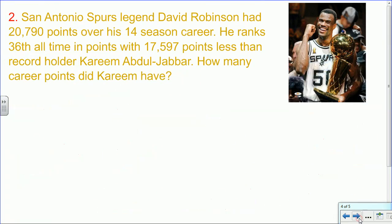Next one. San Antonio Spurs legend David Robinson had 20,790 points over his 14-season career. He ranks 36th all-time in points, with 17,597 points less than record holder Kareem Abdul-Jabbar. How many career points did Kareem have?